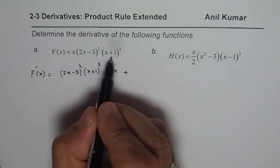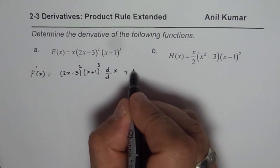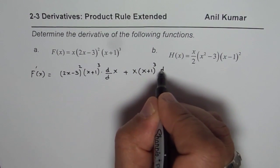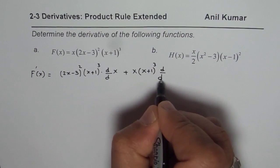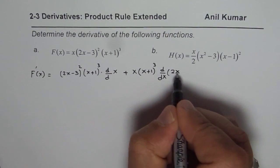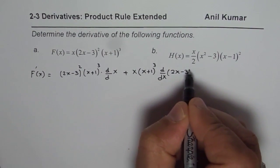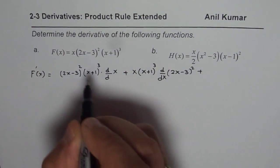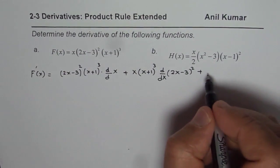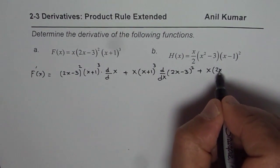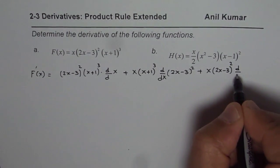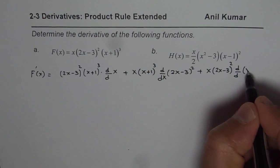The second term: multiply the first and the third — that is x times (x plus 1) cubed — and find the derivative of the second term, which is (2x minus 3) squared. Then the third term: multiply the first and the second — x times (2x minus 3) squared — times the derivative of the third term.